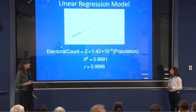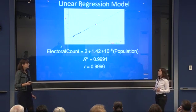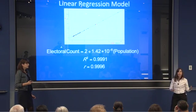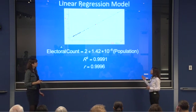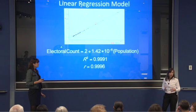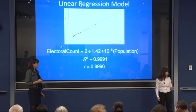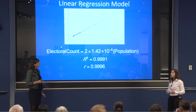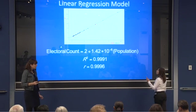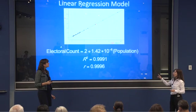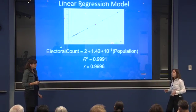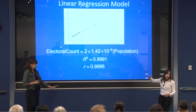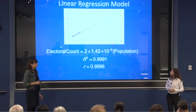This is not only a phenomenally good mathematical model, but it's actually really insightful. The initial value of 2 makes sense because every state gets 2 senators. The slope is also interesting: for every increase of 1 million people in a state, you would get an increase of about 1.42 electors. The R-squared — the coefficient of determination — shows that almost 100% of the variability in the electoral count can be explained by the change in population. So for every one standard deviation a state is above the average population, you'd expect about the same for elector count.